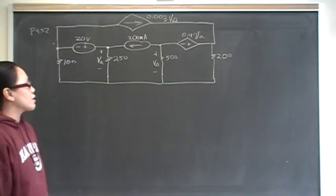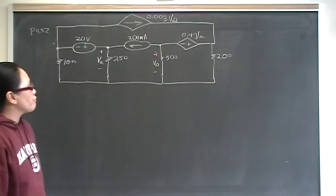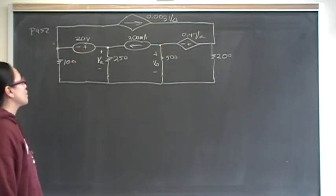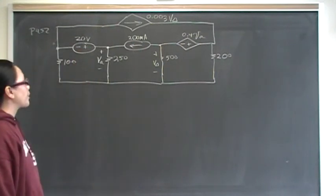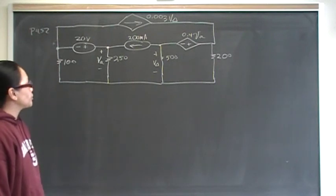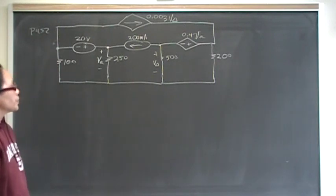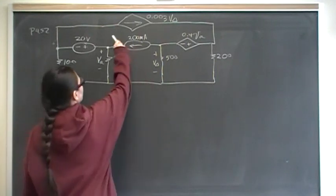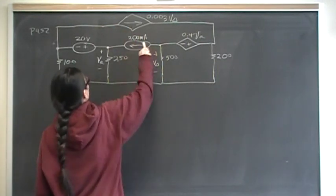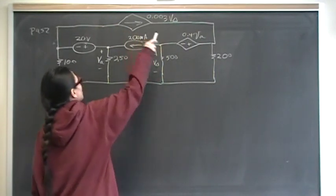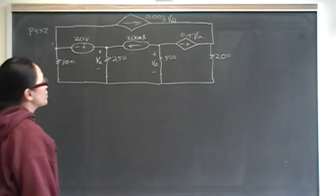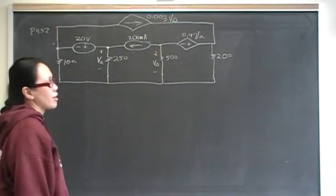The second part of the question asks what is the power dissipated by that 20 volt resistor. When I initially looked at this problem, I saw this curve going through this mesh and I thought, great, this is going to be a mesh method.